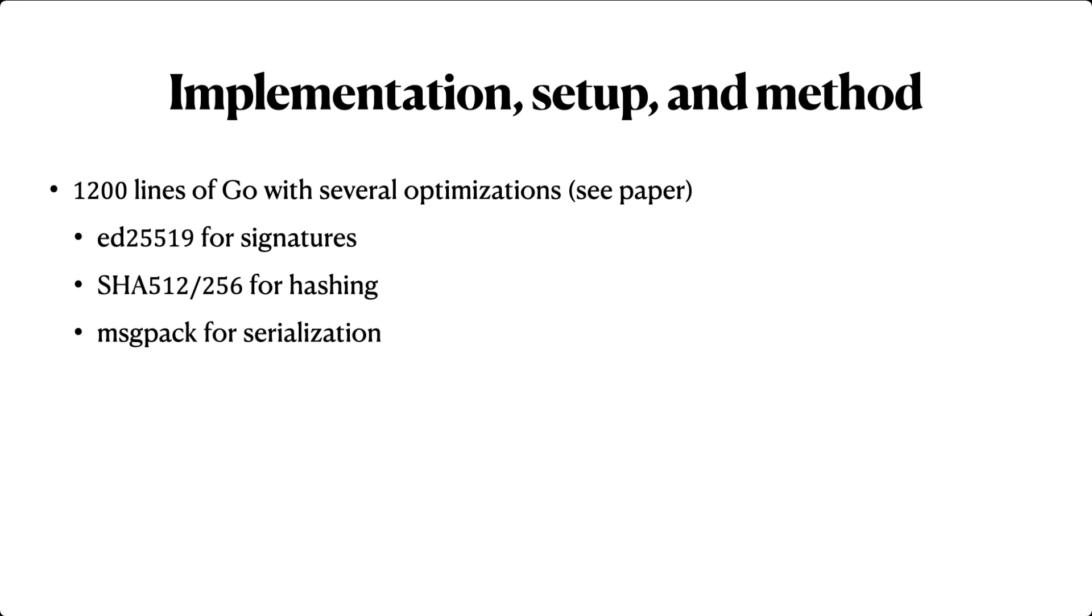We implement our scheme in 1,200 lines of Go, including several optimizations that we describe in the paper. Signatures use ED25519, the hash is SHA-512 truncated to 256 bits, and we use message pack for serialization.